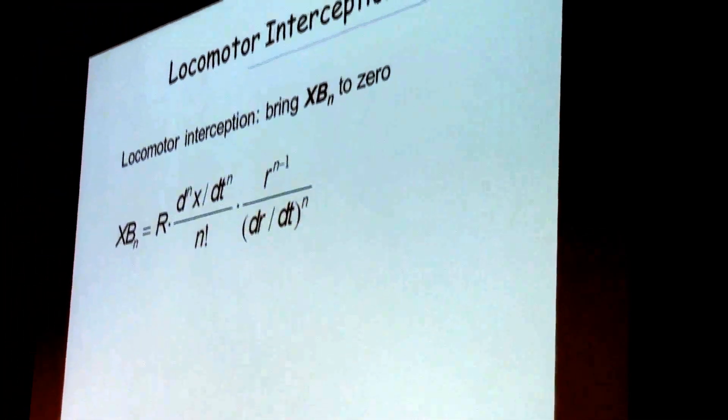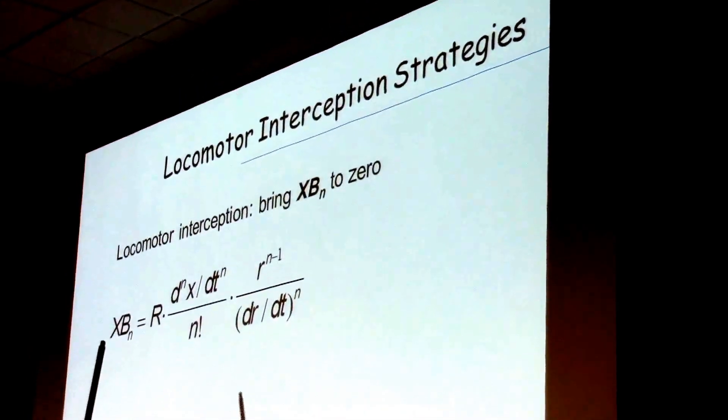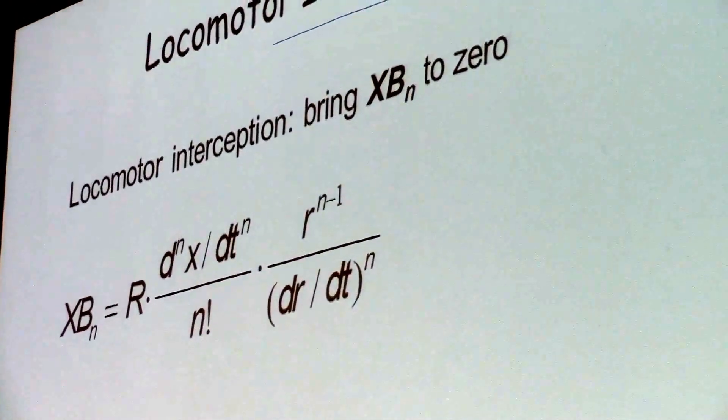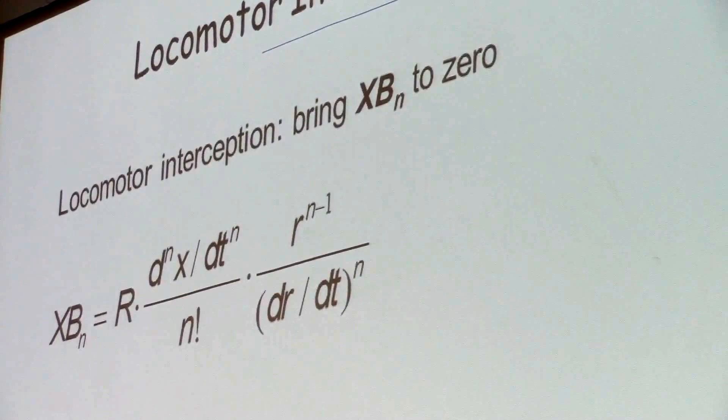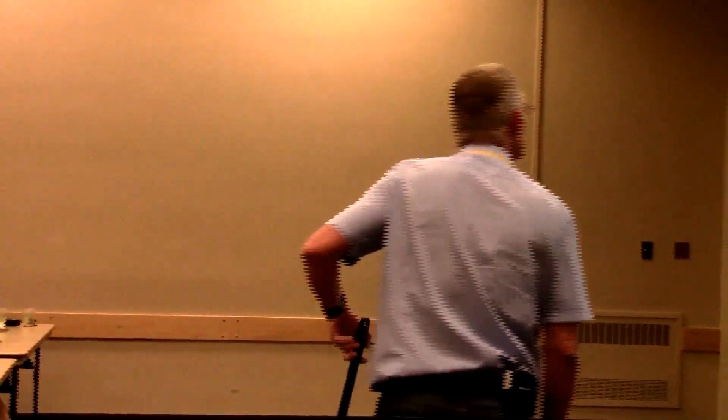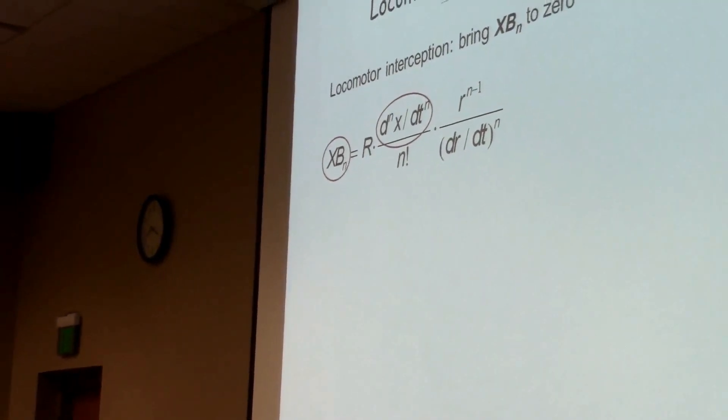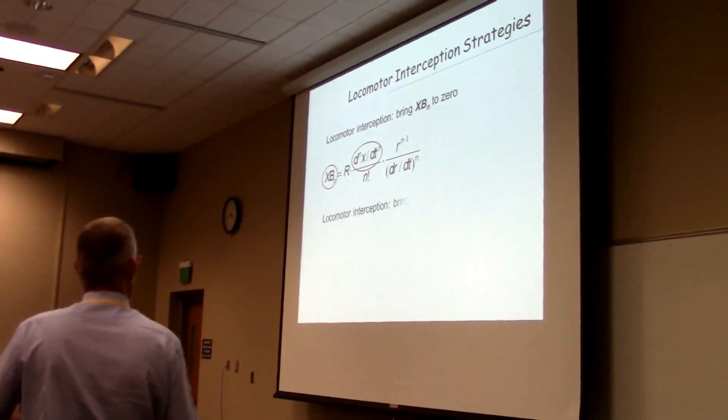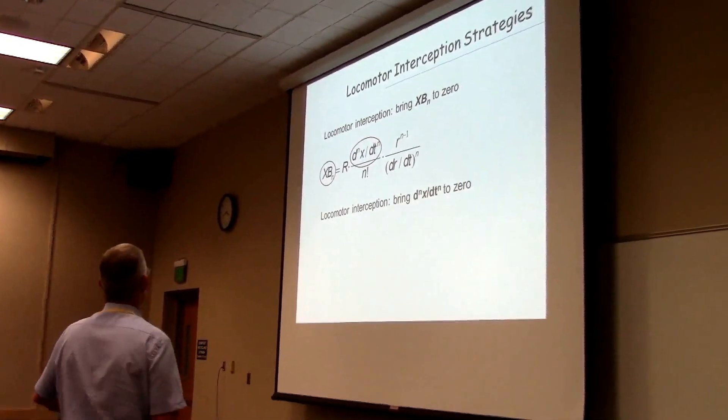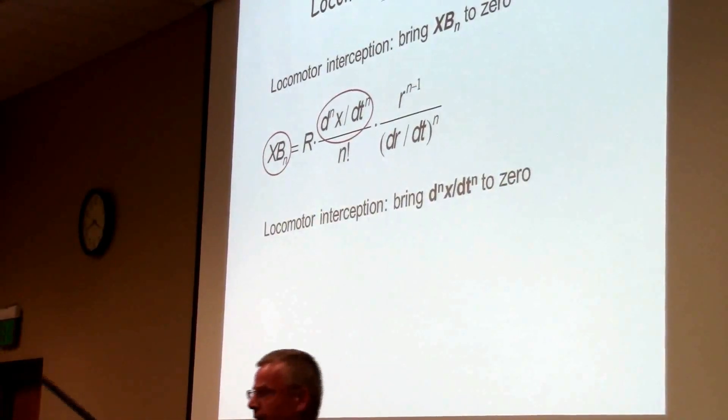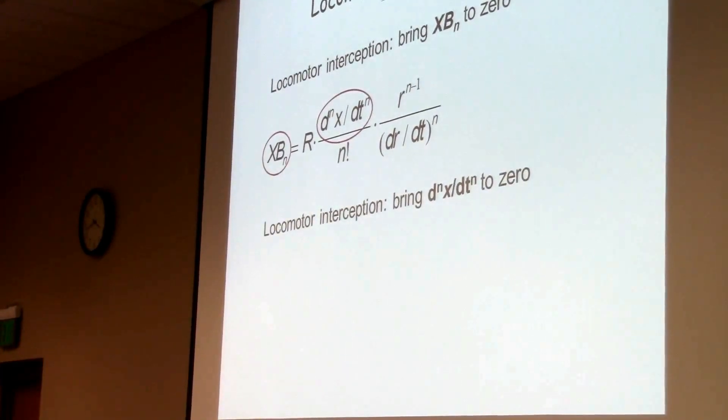So I'll be coming back to this generic expression, and the question in the literature has been, which order do you use? Locomotor interception is you want to be where the ball will be. So you want the ball arrival position to be 0, because you want it to be exactly where you are. So all you have to do, in the end, is know this thing, which will bring that to 0. And you don't have to take into account either factorials or changes in optical size. So locomotor interception has been traditionally modeled as bringing an nth order derivative of this angle theta to 0.